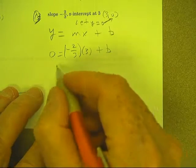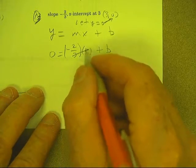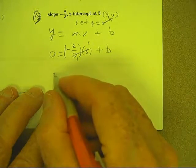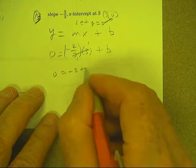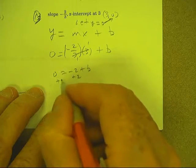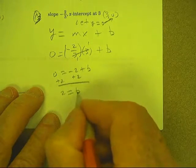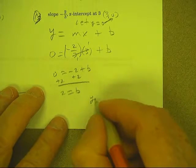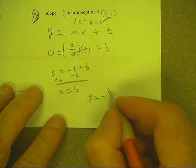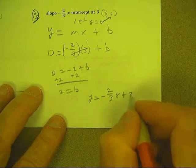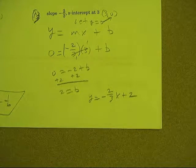There it is right there. The 3s will divide, and I'll get 0 equals negative 2 plus b. Add 2: 2 equals b. So y equals negative two-thirds x plus 2. Bingo. We'll be back.